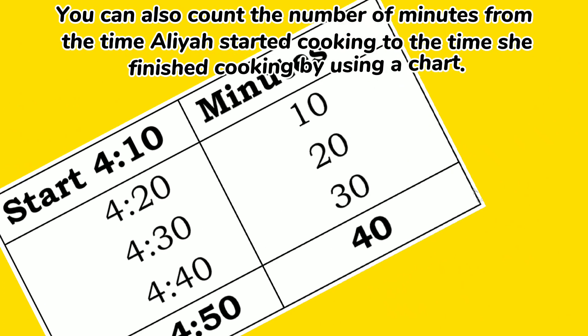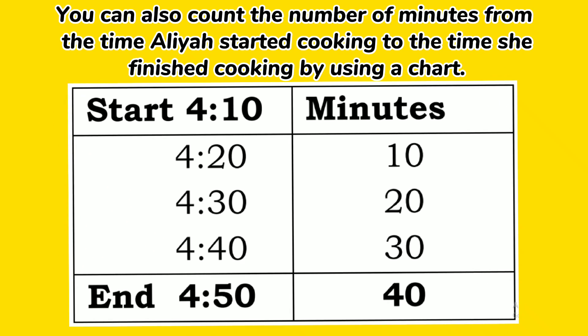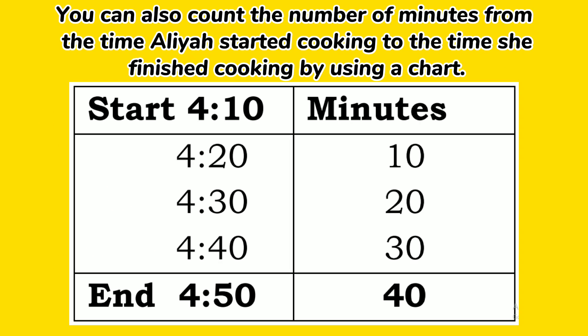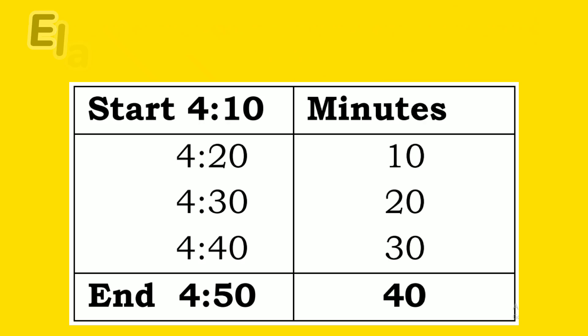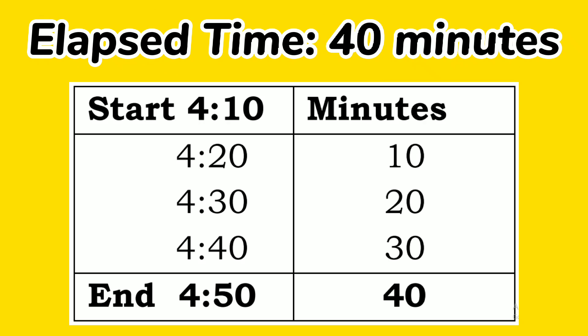You can also count the number of minutes from the time Aliyah started cooking to the time she finished cooking by using a chart. From 4:10, 4:20, 4:30, 4:40, and 4:50 — the elapsed time is 40 minutes.